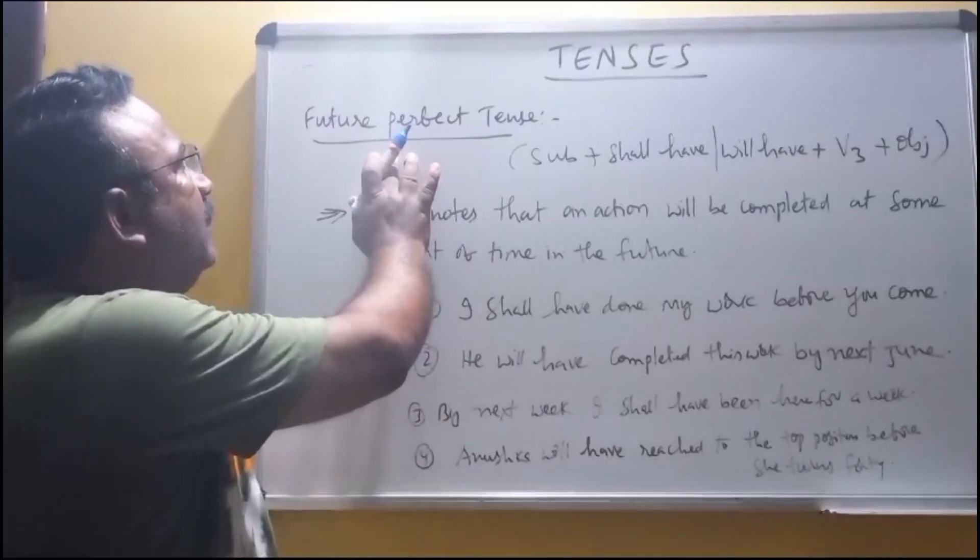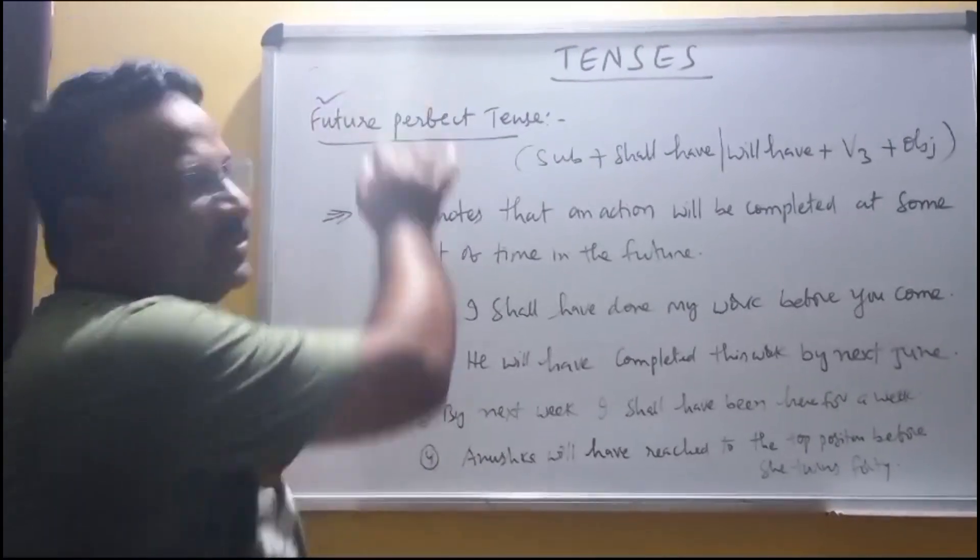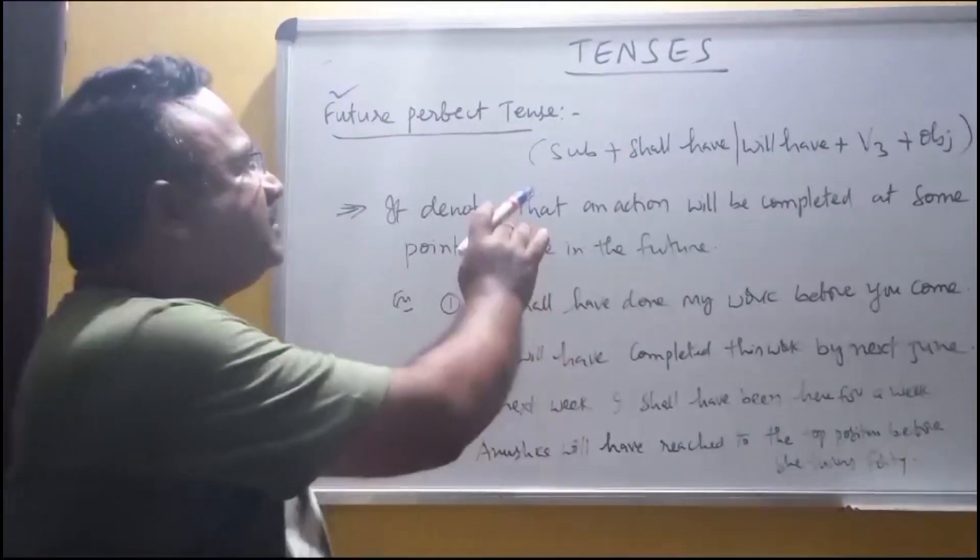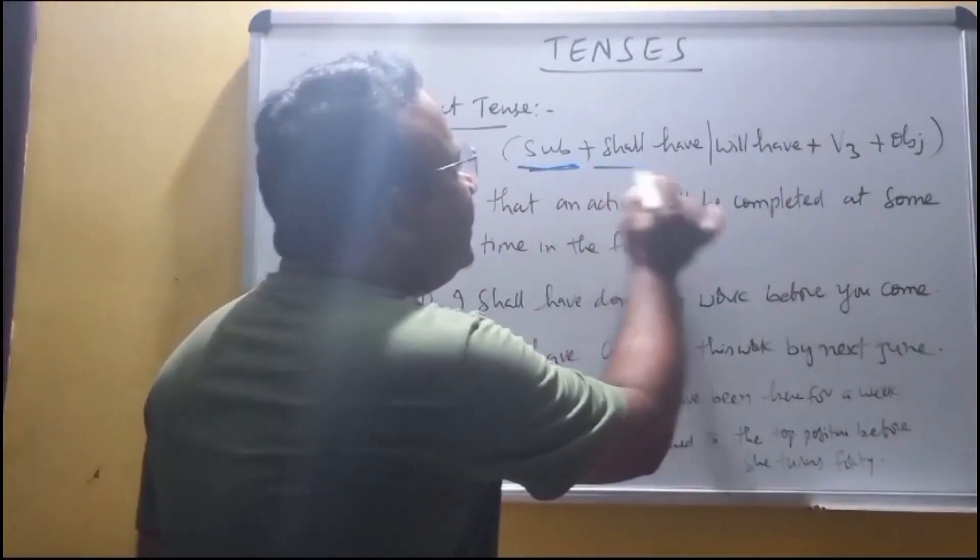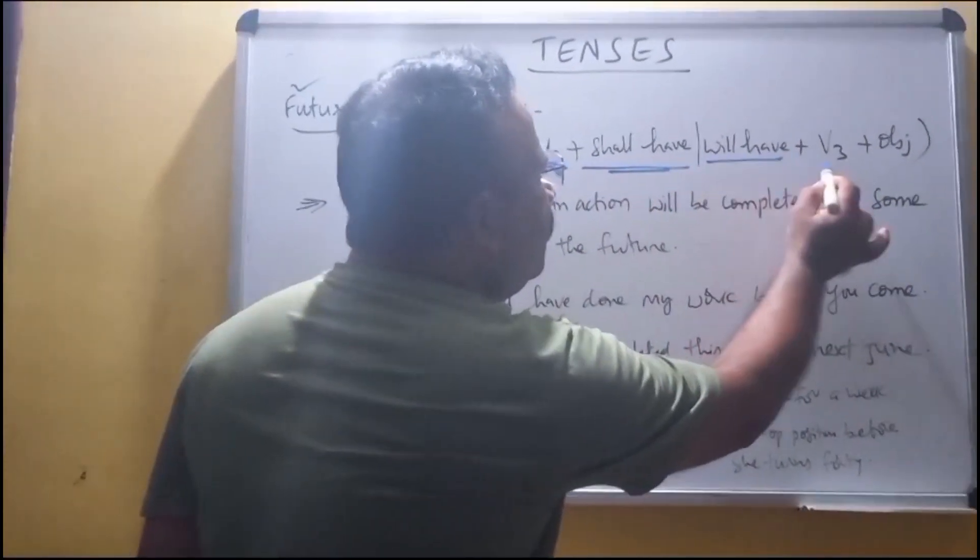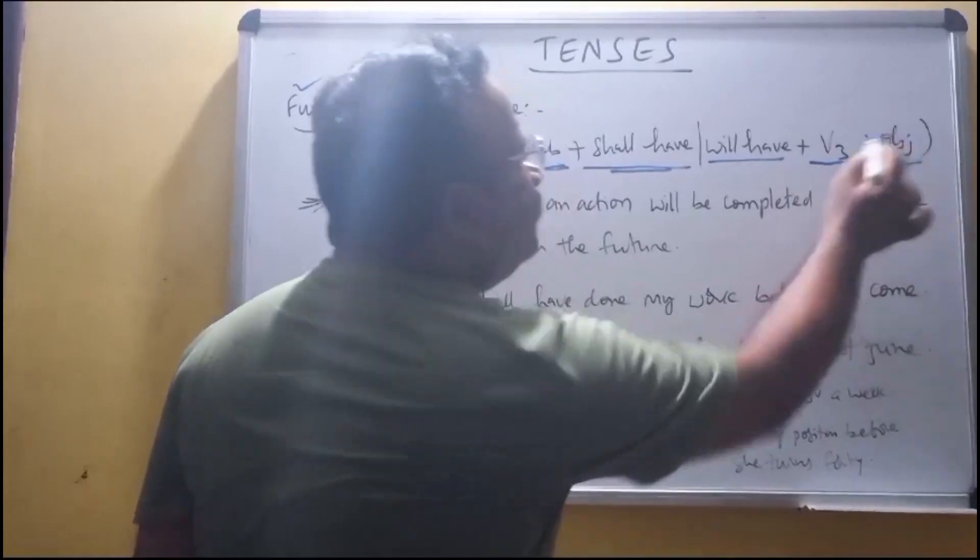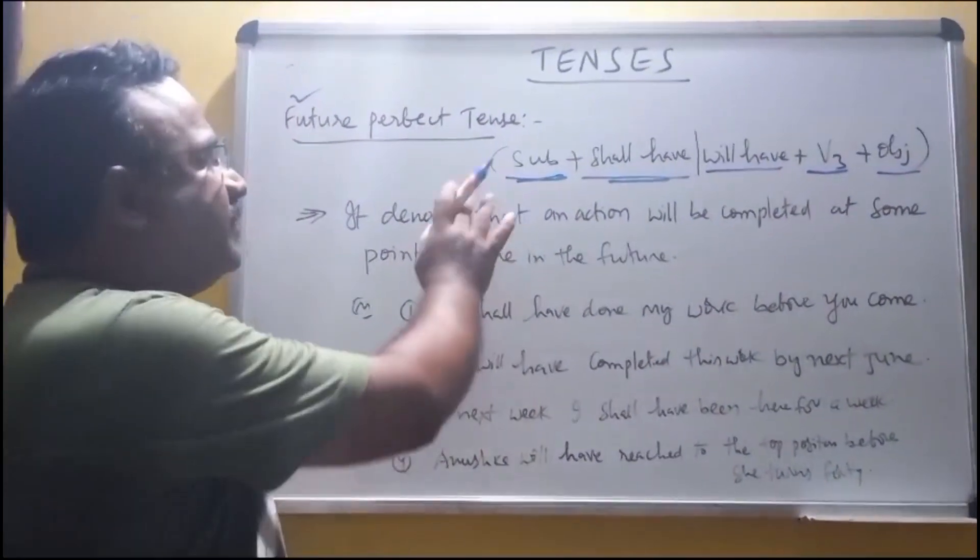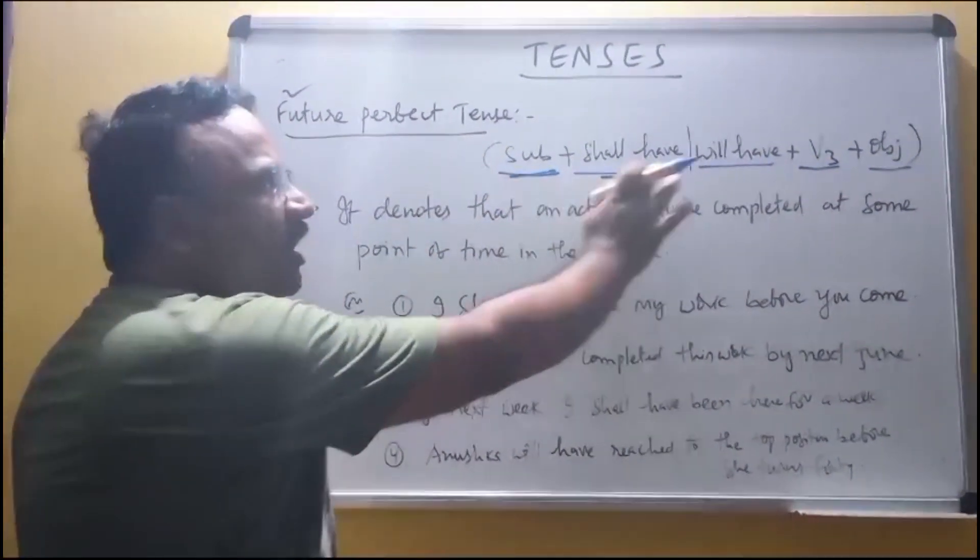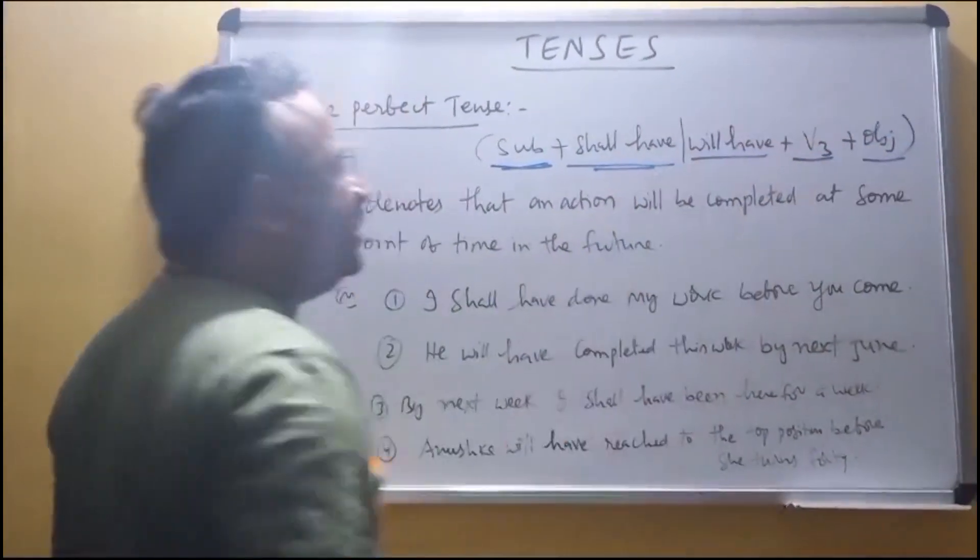Now let us discuss future perfect tense. The structure is subject, shall have or will have plus v3 plus object.